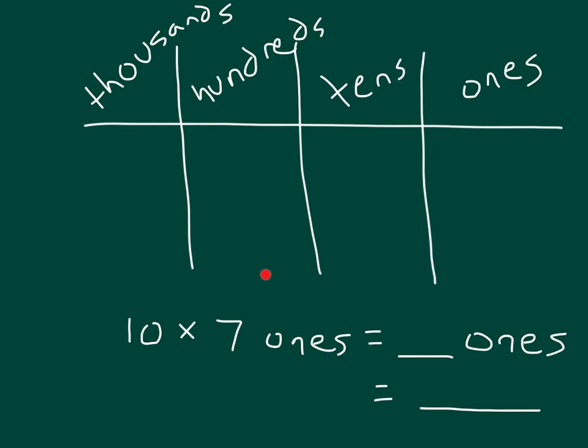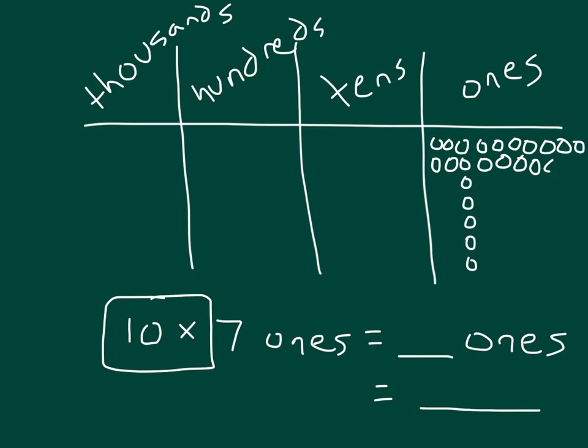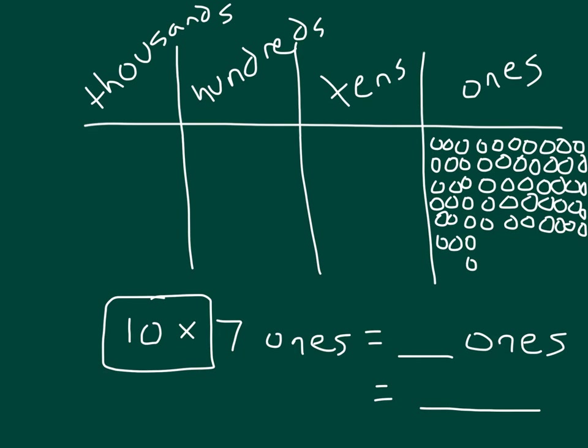So let's start by modeling 7 ones. If we have 7 ones there, and we multiply by 10, what we're doing there is for each of these ones, it now is 10. And I'll continue that. Because 1 times 10 is 10. As you see, each of those is now 10 of them. So we can regroup 10 of those to 1.